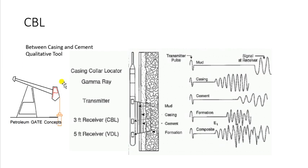When the cement is firmly bonded to the casing and the formation, the signal is attenuated and takes on the characteristic of the formation behind the casing.